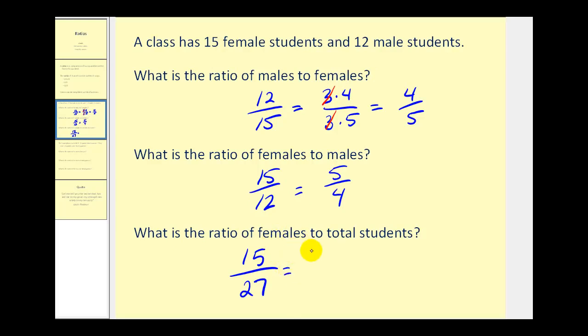This can be simplified. 15 would be 3 times 5, and 27 is 3 times 9, so they have a common factor of 3. Therefore the ratio of female students to total students would be 5 to 9.